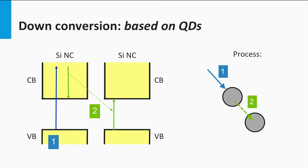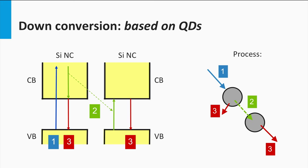If other recombination loss mechanisms like Auger recombination and Shockley-Read-Hall recombination can be suppressed, these electron-hole pairs in both quantum dots can radiatively recombine, sending out two reddish photons. As a result, one bluish photon is converted into two reddish photons, which can be absorbed by a PV material.